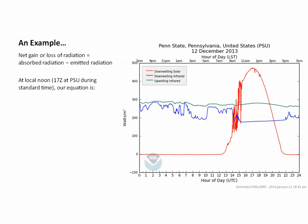Say we want to do this calculation at local noon, which is 17Z at Penn State during standard time. First we figure out our sources of incoming radiation — that would be downwelling solar and downwelling infrared, the red curve and the blue curve. Reading values from the graph: incoming solar radiation is about 470 watts per meter squared at 17Z, and downwelling infrared radiation is about 180 watts per meter squared at 17Z. The emitted radiation — upwelling infrared on the green curve — is about 280 watts per meter squared.